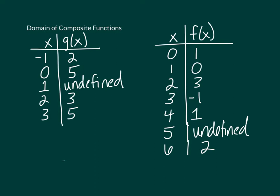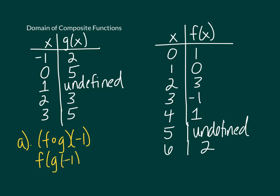First, just to get warmed up, I want you to try to find what f of g of negative 1 is. This is the same as writing it like this. This means that first we're going to take negative 1 and see where g pairs it. Negative 1 is paired with 2 by the function g. Then we take that output and see where it gets paired by function f. So 2 gets paired with 3 by function f, so the overall output is going to be 3.